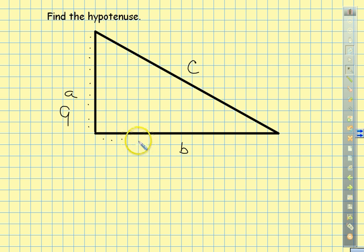1, 2, 3, 4, 5, 6, 7, 8, 9, 10, 11, 12, 13, 14, 15, 16, 17 long. So now we're going to use the A squared plus B squared equals C squared formula and plug it in.